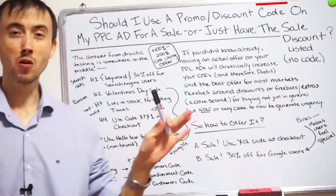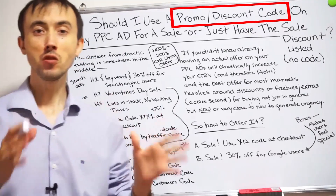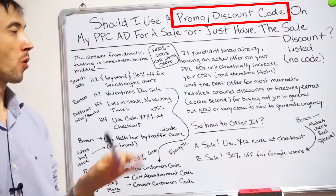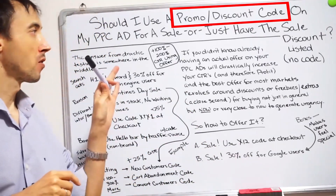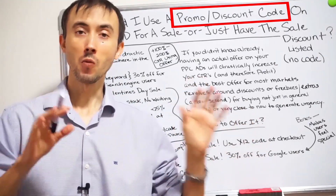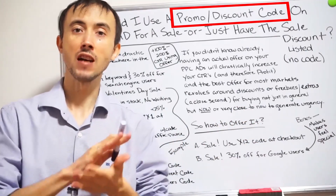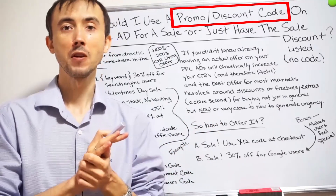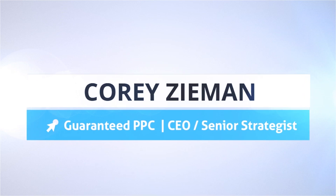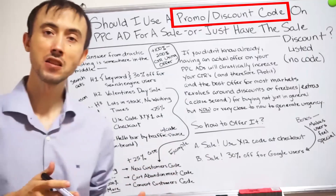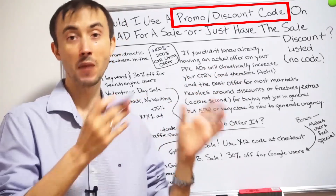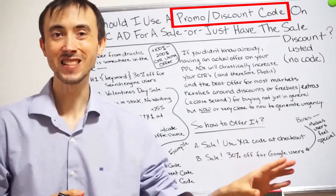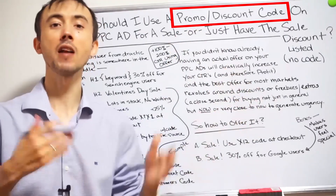Today we're going to talk about promo or discount codes. Should you use those within your PPC ads and landing pages? Should the discount represented by the code be announced as an amount off on your ads, or should you just mention the discount code itself? With PPC ads you only have so much ad space, so the question is: do you devote that space to telling people the discount amount, or do you tell them the actual discount code in the ad?